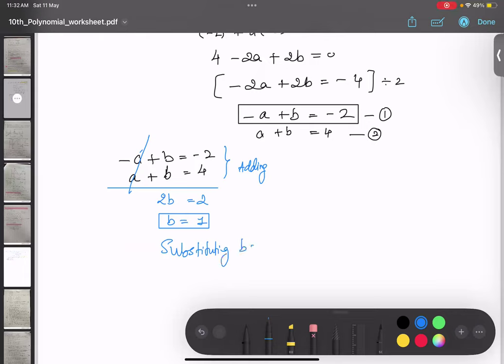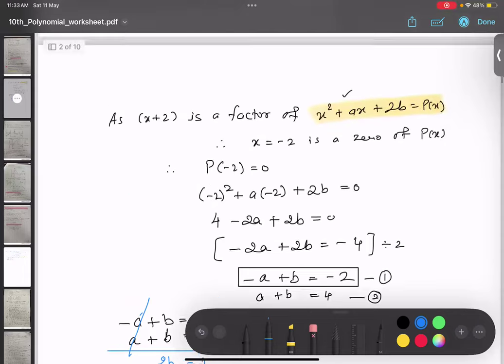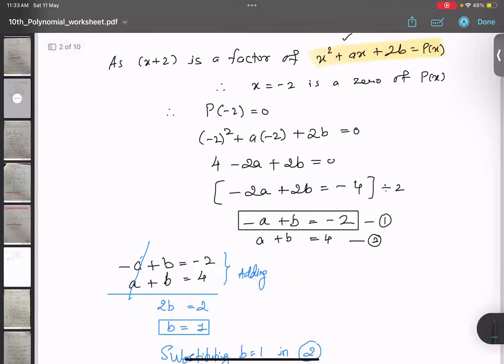Substituting b equals 1 in the second equation: a plus 1 equals 4, so a value is 3. Understood? Any doubt in this? I have used both the chapters' understanding.